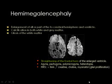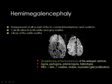Hemimegalencephaly — from its name — means that part or half of the brain is abnormally enlarged due to abnormal proliferation of cells in that hemisphere. In cadaveric sections, the right cerebral hemisphere is abnormally enlarged, the ventricle is enlarged, and a characteristic configuration is the frontal horn pointing anteriorly. This is a main diagnostic feature; normally the frontal horn points laterally, but in hemimegalencephaly it points anteriorly.